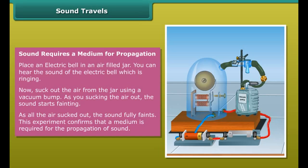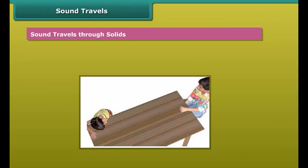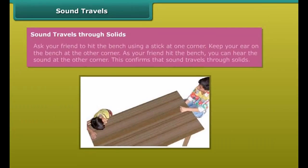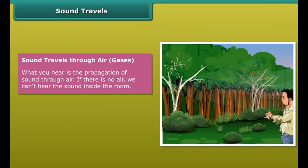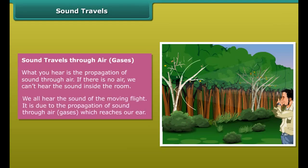Sound requires a medium for propagation. Place an electric bell in an air-filled jar. You can hear the sound of the electric bell ringing. Now suck out the air from the jar using a vacuum pump. As you suck the air out, the sound starts fading. As all the air is sucked out, the sound fully fades. This experiment confirms that a medium is required for the propagation of sound.